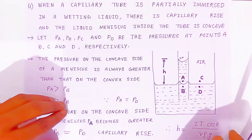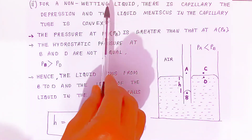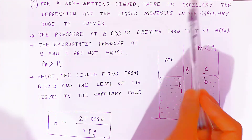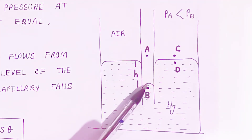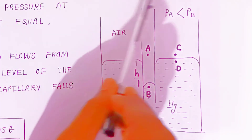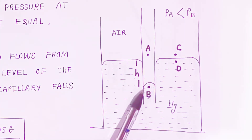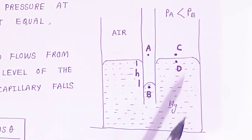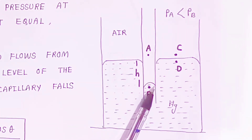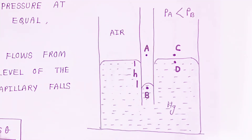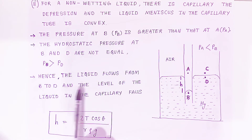For a non-wetting liquid like mercury, there is capillary depression — the level falls below the initial level. The liquid meniscus in the capillary tube is convex. Pressure at B is greater than pressure at A. The hydrostatic pressures at B and D are not equal; to equalize the pressure, liquid flows from B to D, so the level of liquid in the capillary falls.